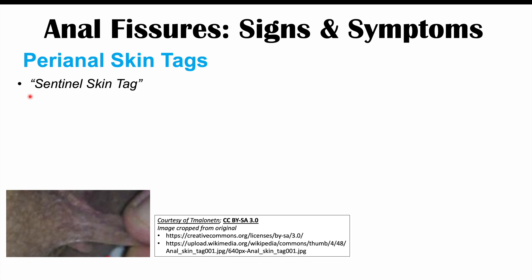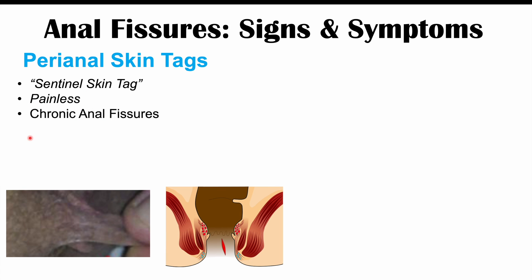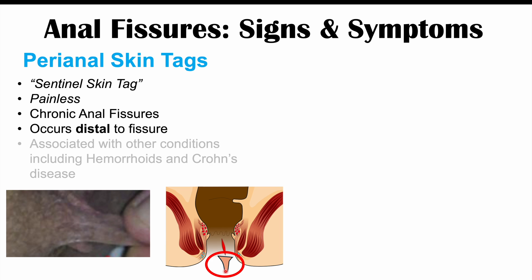The next clinical findings are seen in chronic anal fissures. These include perianal skin tags, known as sentinel skin tags. They are painless, occur in chronic anal fissures, and appear distal to the fissure — directly below it. Perianal skin tags can also occur in other conditions like hemorrhoids and Crohn's disease.